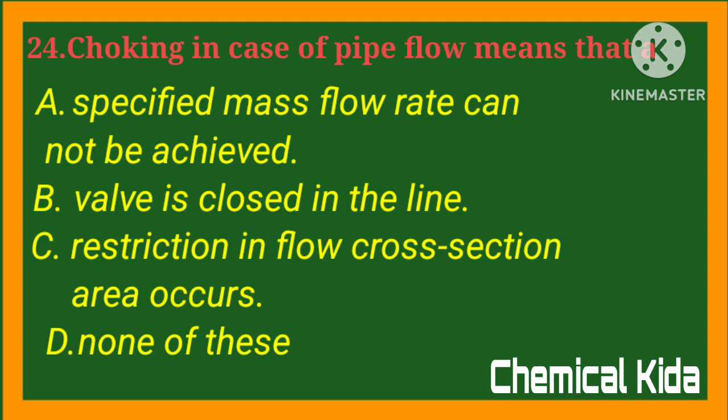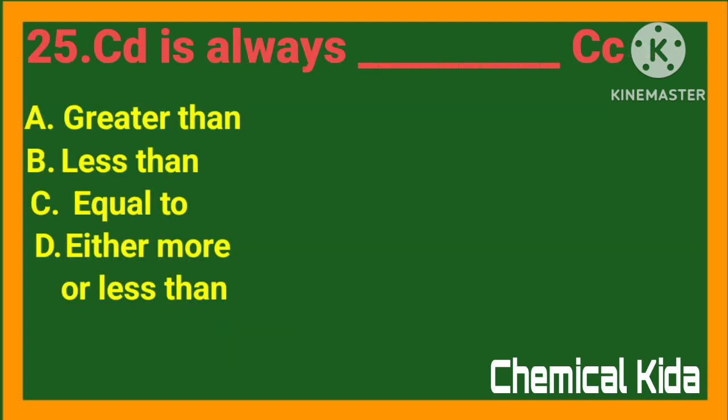Choking in the case of pipe flow means that: a) specified flow rate cannot be achieved, b) wall is closed in the line, c) restriction in flow cross-sectional area, d) none of these. Answer: a) specified mass flow rate cannot be achieved. Cd is always: a) greater than Cc, b) less than Cc, c) equal to Cc, d) either more or less.